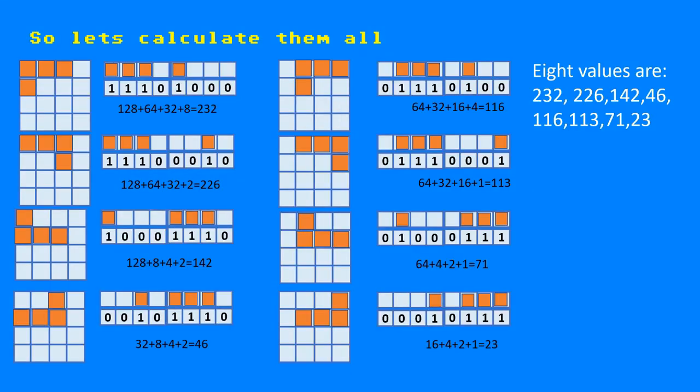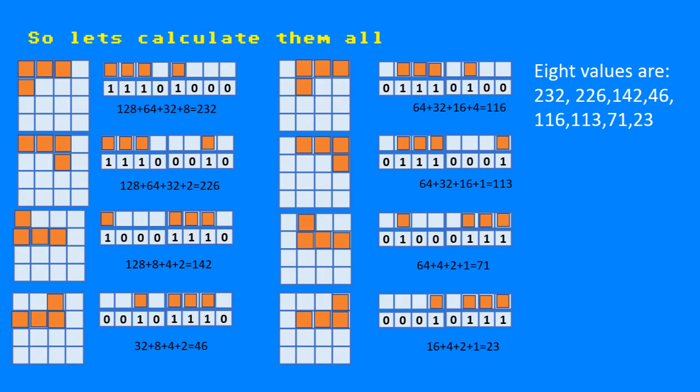Now we have to calculate all possible values that can be formed horizontally. Do we need to calculate them all? No, only the eight that can be formed on the first two rows. The others are exactly the same patterns, only placed one row down in the matrix. I will come to that later as we start programming. Calculating the values, we have now the eight values we need: those are 232, 226, 142, 46, 116, 113, 71, and 23.